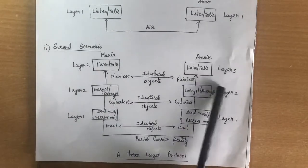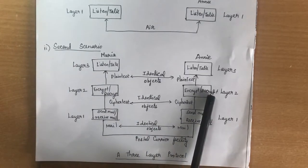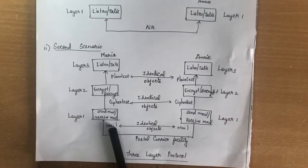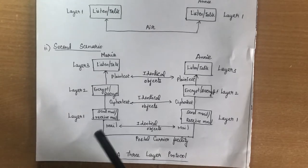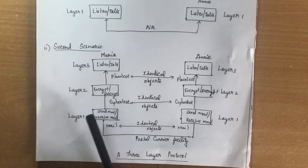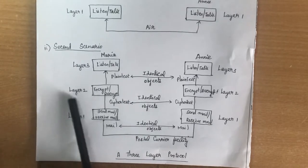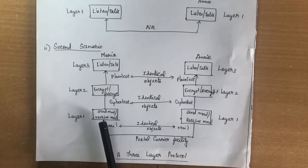This is how communication takes place between Maria and Annie when they move to different locations — requiring three different layers to keep their information confidential. The main advantages of using protocol layering are that it provides a more modular design, and it is very easy to troubleshoot. If any error occurs in one layer, we can troubleshoot that particular layer alone.